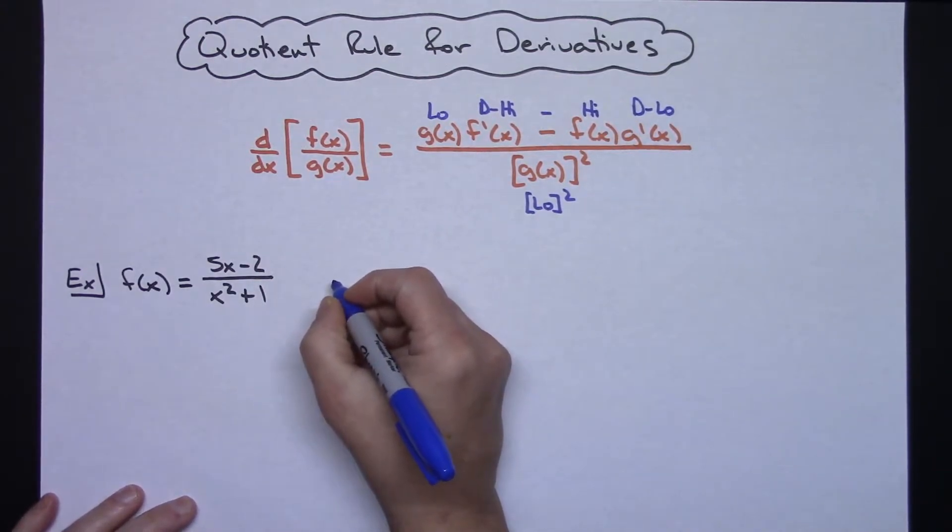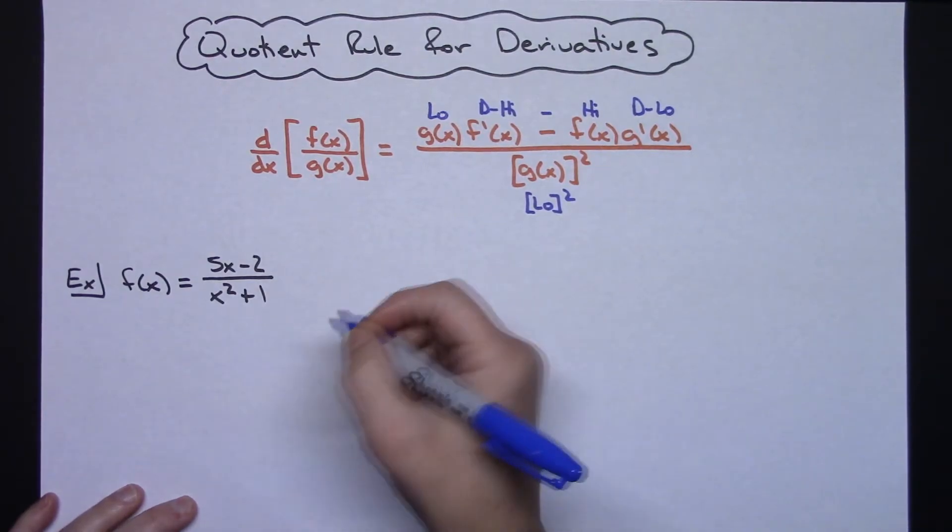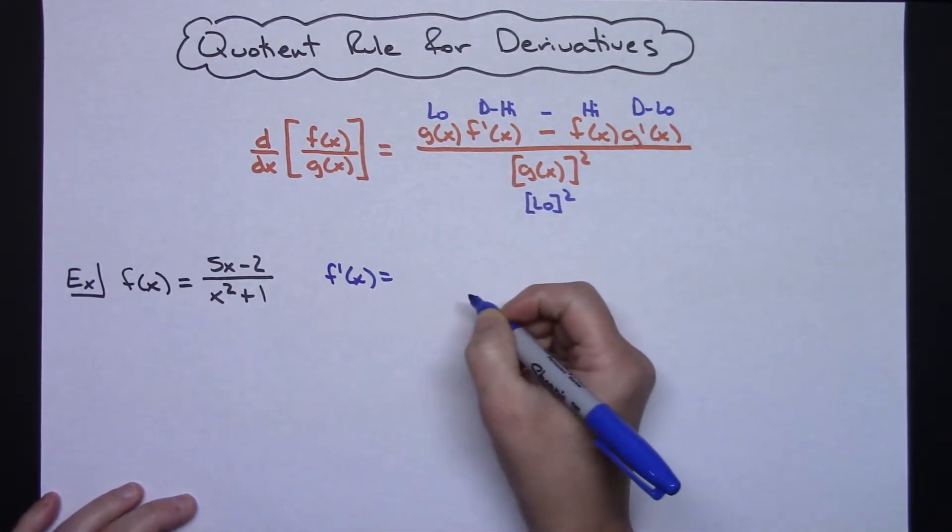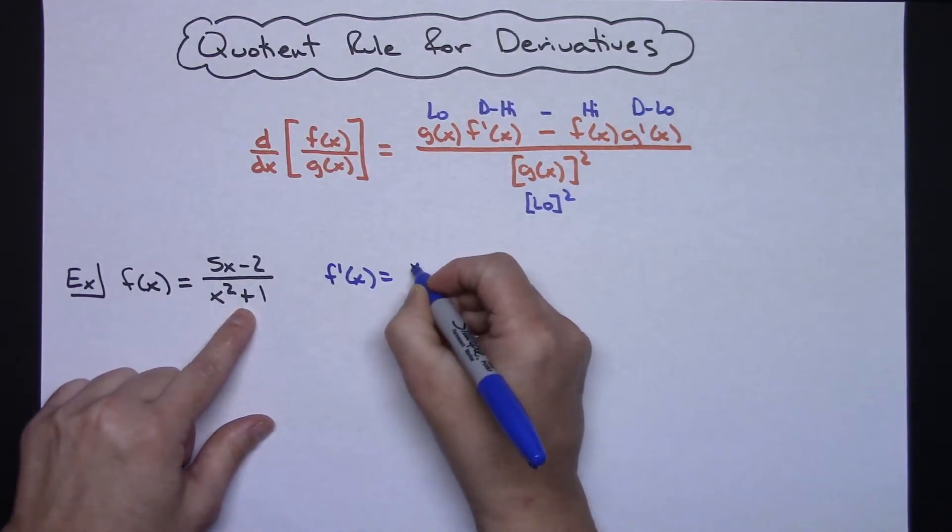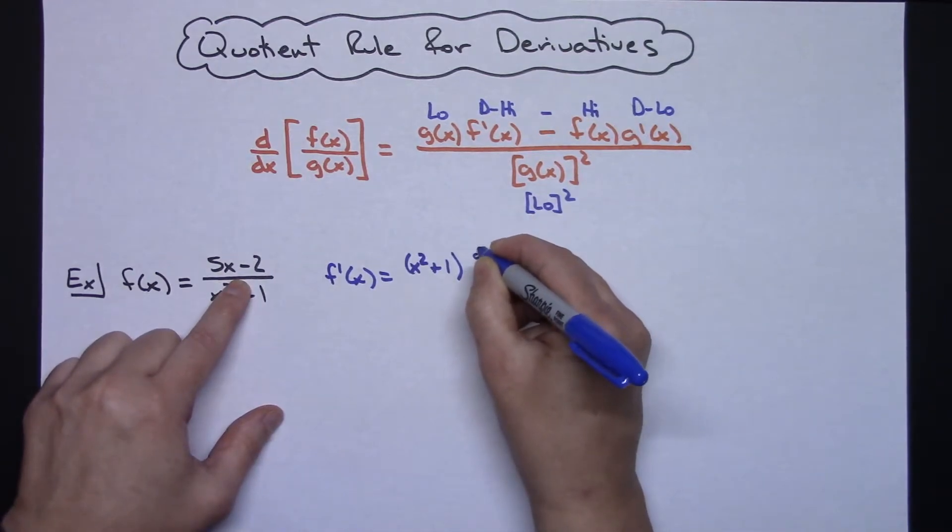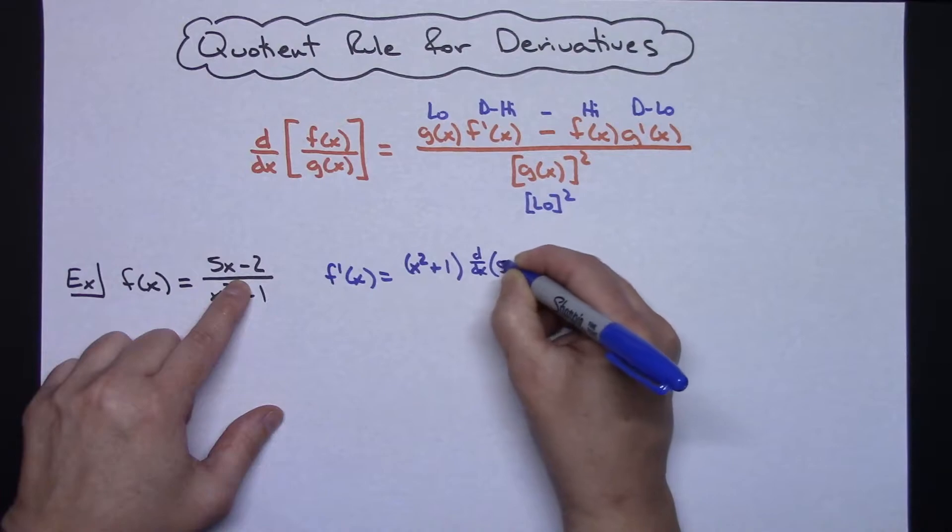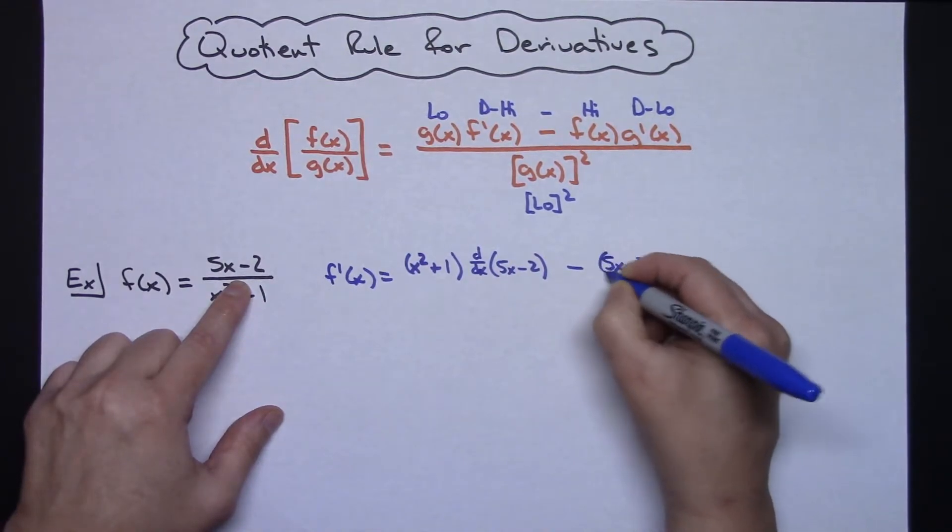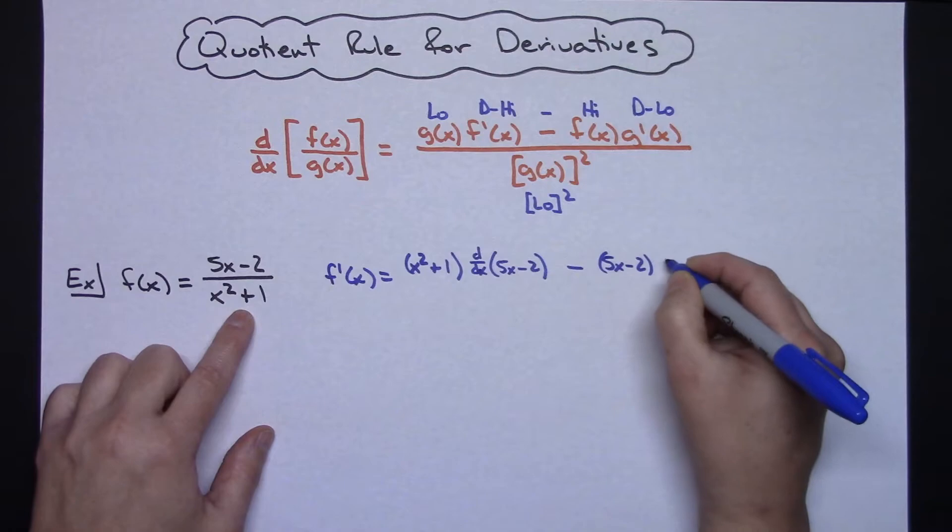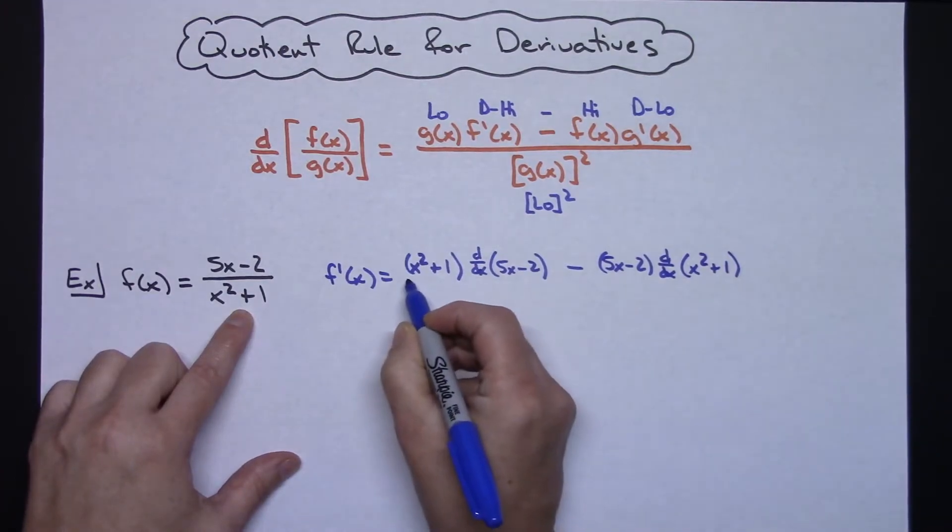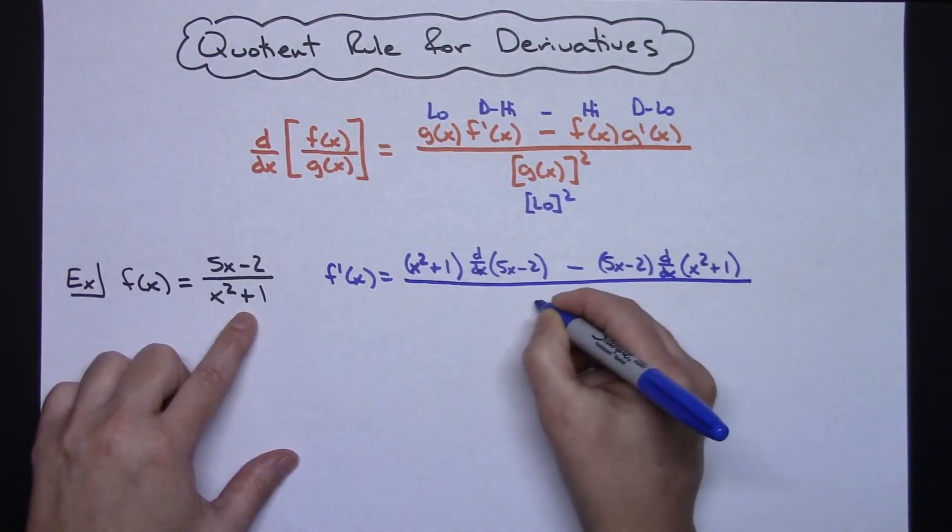Alright, now I am going to use some derivative notation in here that after you get really good at it you would probably drop after a while. But let's say we're going to start taking the derivative here. So f'(x) is equal to low, so (x² + 1), times the derivative of the top, so I'm going to write it d/dx of (5x - 2). Alright, minus the top (5x - 2) times the derivative of the low, so d/dx of (x² + 1), and then that is all over the bottom (x² + 1) squared.